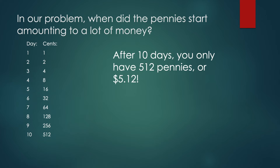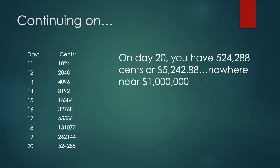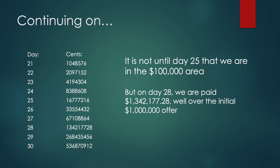Exploring this further, let's figure out when the pennies start really amounting to a lot of money. After day 10, you only receive $5.12, so after 10 days you might think it's not going to amount to much. Even after 20 days you're only up to $5,242.88 — nowhere near $1 million. It's not until day 25 that you're even in the $100,000 area. But on day 28, we're paid $1,342,177.28, which is well over the initial $1 million offer.